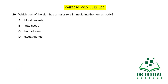In this question, which part of the skin has a major role in insulating the human body? The options are blood vessels, fatty tissue, hair follicles, and sweat glands. Fats are poor conductors of heat, so they act as insulators. The answer is B: fatty tissue.